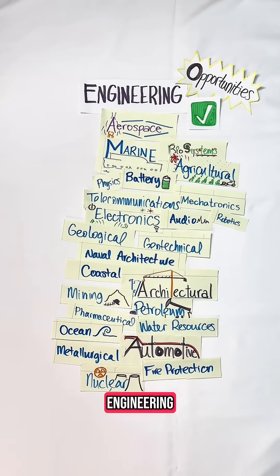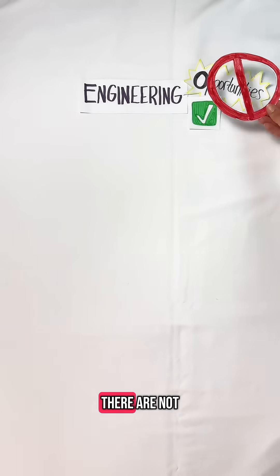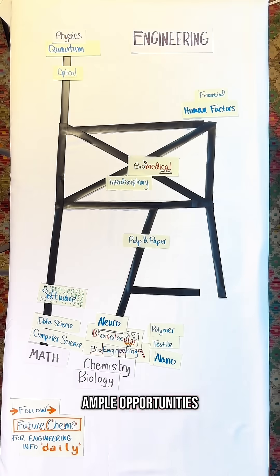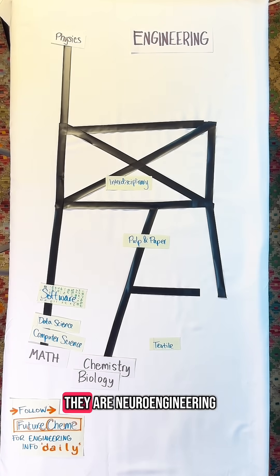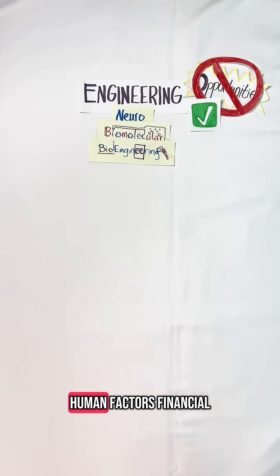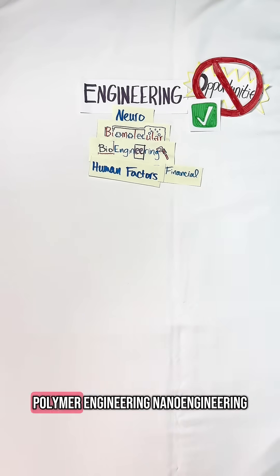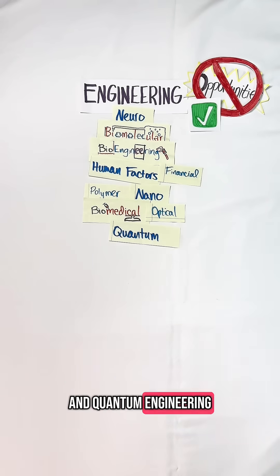The next group I say is fine as long as you are highly committed. The reason being there are not ample opportunities, so you have to know where you're going to end up working before you choose these. They are neuroengineering, biomolecular, bioengineering, human factors, financial engineering, polymer engineering, nanoengineering, biomedical engineering, optical engineering, and quantum engineering.